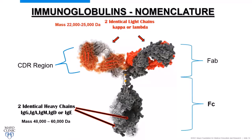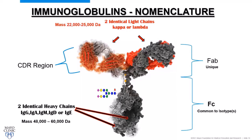Then we have the Fc portion — fragment crystallizable — which is the part that will crystallize if cleaved off. This is where the isotype is defined, not the clonality. These immunoglobulins are all post-translationally modified with glycosylations, mostly on the heavy chain, though we'll discuss cases where that doesn't happen.